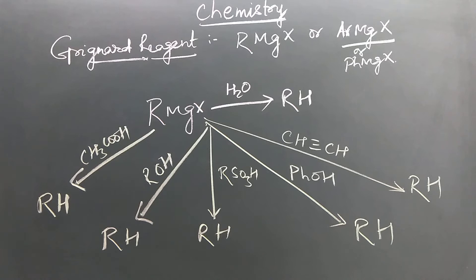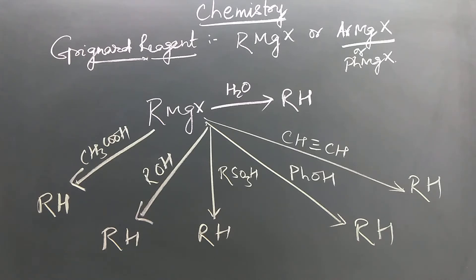Grignard reagent is highly reactive and it has a nucleophilic carbon. The carbon present in Grignard reagent has a partial negative charge, so it can attack any electrophilic center.